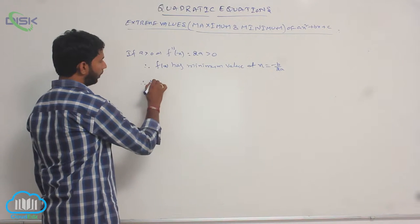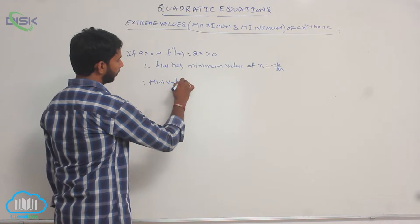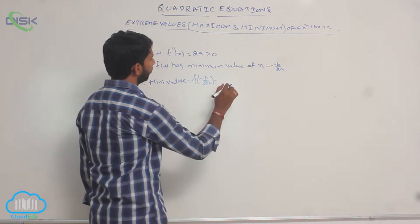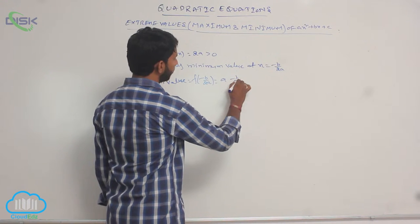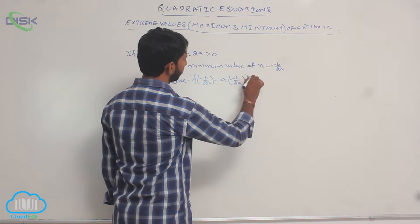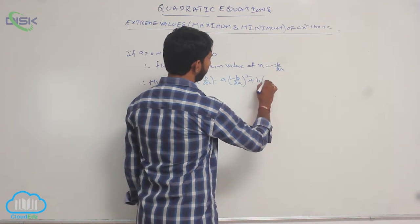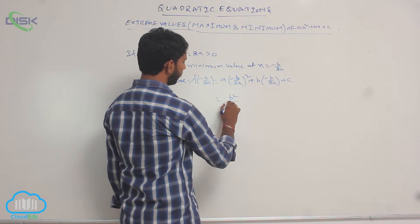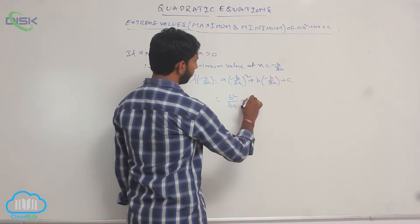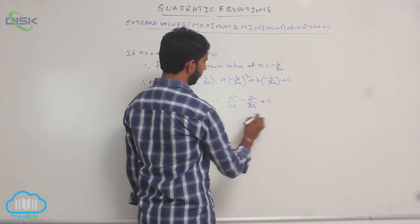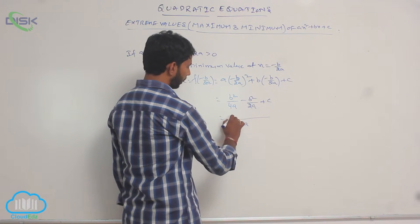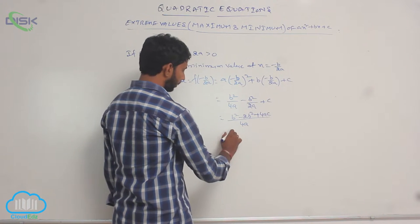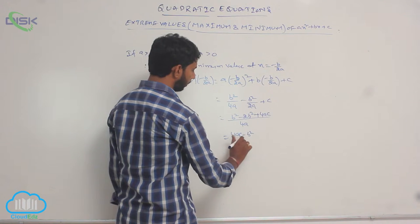Therefore, minimum value is equal to f of minus b by 2a, which equals a times minus b by 2a whole square, plus b times minus b by 2a, plus c. This equals b square by 4a minus b square by 2a plus c. Taking LCM, here LCM is 4a, giving b square minus 2b square plus 4ac, which equals 4ac minus b square by 4a.